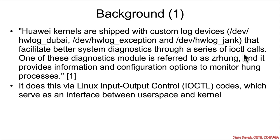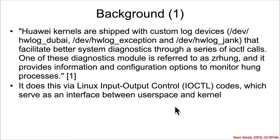It uses ioctls, which are Linux input-output control codes, and these are a generic interface between user space and kernel space that we have seen in other examples. Basically, user space calls into kernel space and says it needs to get some information about logs and what's going on for processes that have stopped responding or are hung.